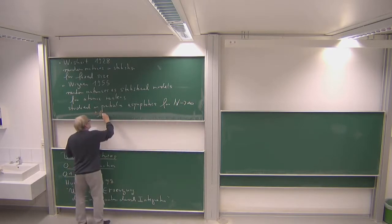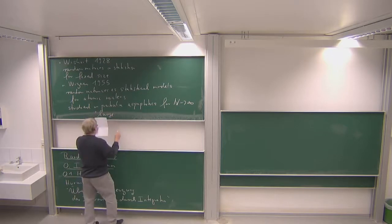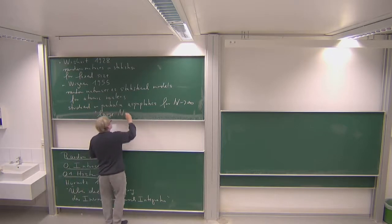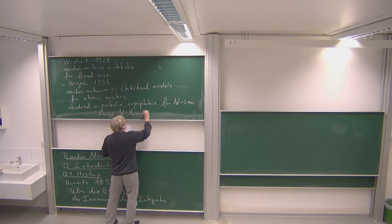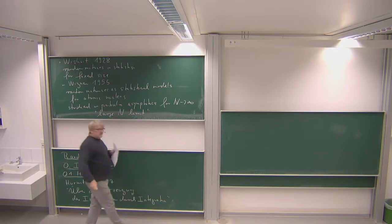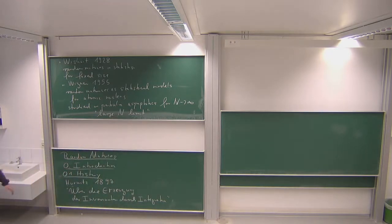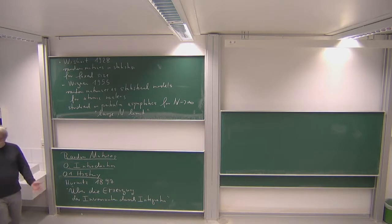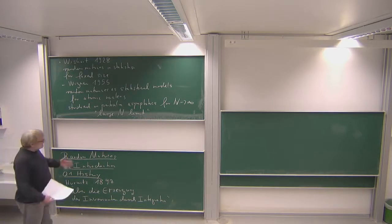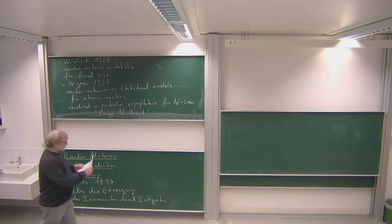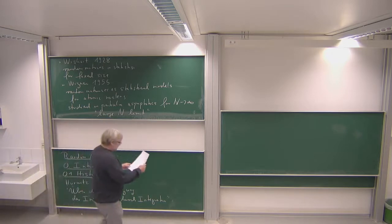This asymptotics usually goes under the name of large n limit in this subject. And he proved the first basic theorem in random matrix theory, which is the Wigner semicircle law — something which we will also try to understand and present in the first couple of lectures.